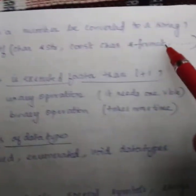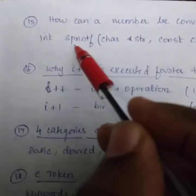How can a number be converted to a string? Using sprintf.